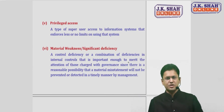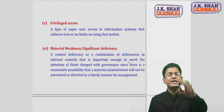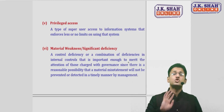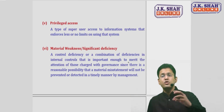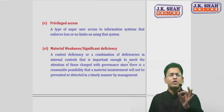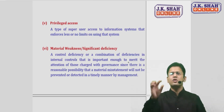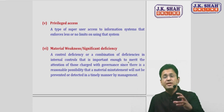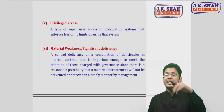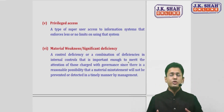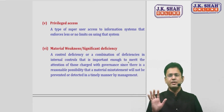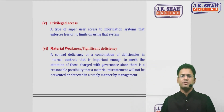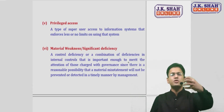There are normal users who are given access according to their duty — role-based access — and there are super users given almost unrestricted access with very limited restrictions. Privileged access refers to those super users only. It is a type of super user access to the information system that enforces little or no limits — you can access everything or nearly everything on that system.